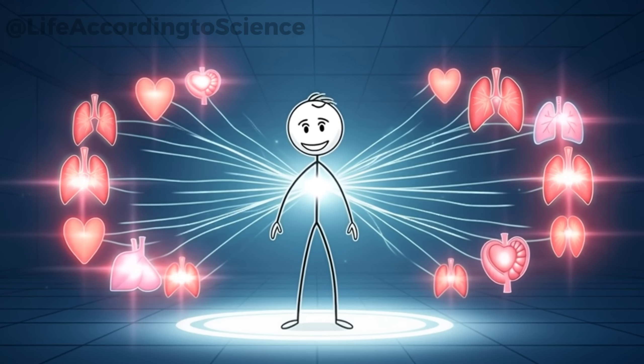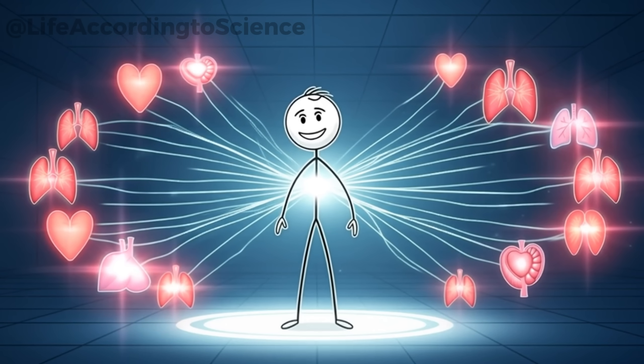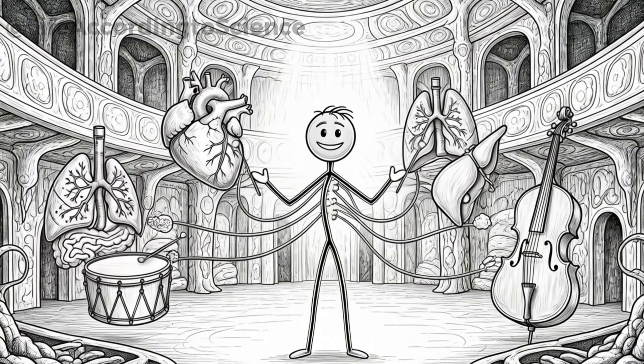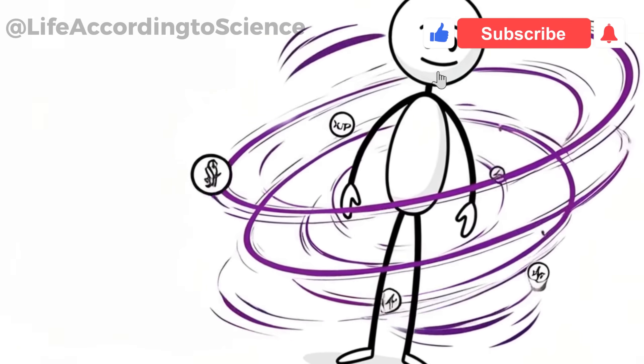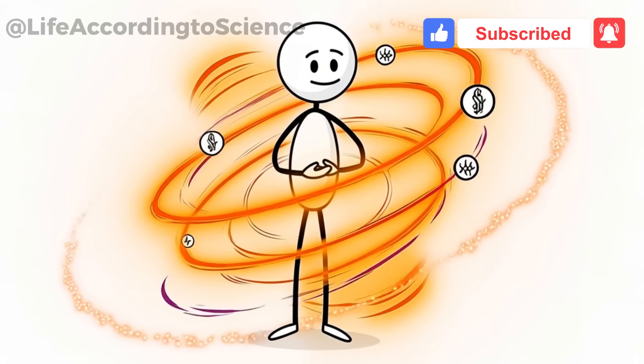By hour 4, hunger hormones such as ghrelin spike, making you think you're starving, even though your energy levels are still stable. Your body is used to routine, and breaking it feels like a crisis. But what seems like discomfort is actually the beginning of a fascinating adaptation. From here, each organ takes on a new role, as if every system in your body is part of a survival orchestra. And the conductor? Your metabolism, quietly orchestrating a symphony of changes.